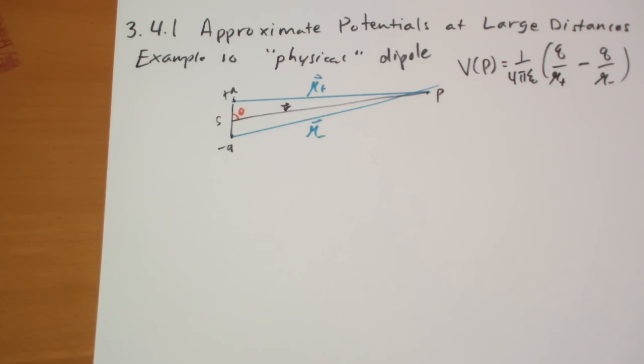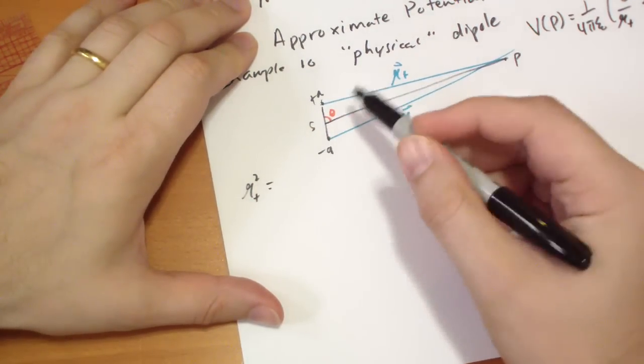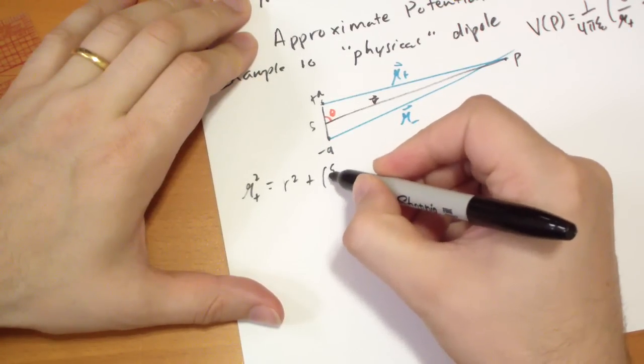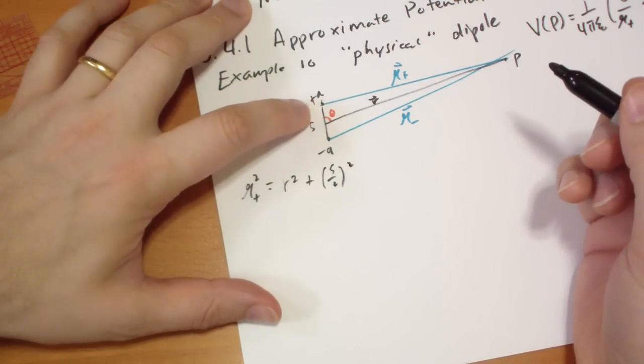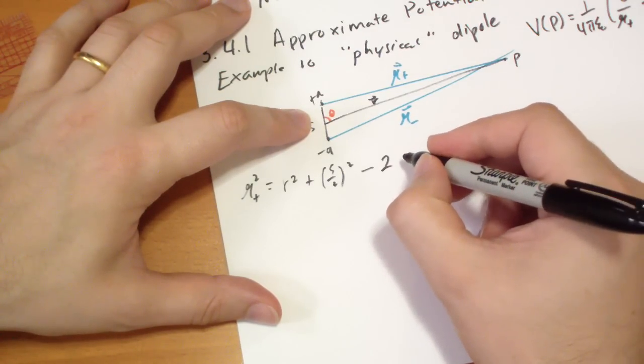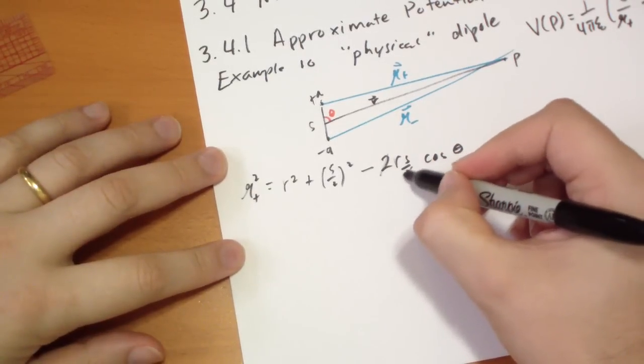And this curly R is the vector from the charges themselves to the point. So, how long is the curly R? Notice there's a slight difference between the two, especially when P is not exactly perpendicular to the two particles. So we can rewrite, using a lot of cosines.